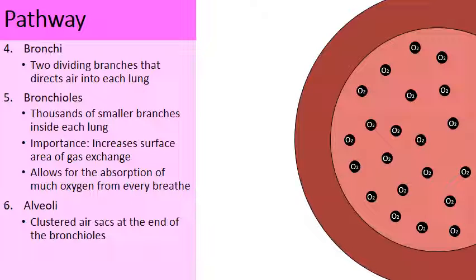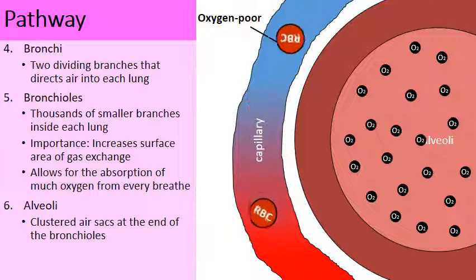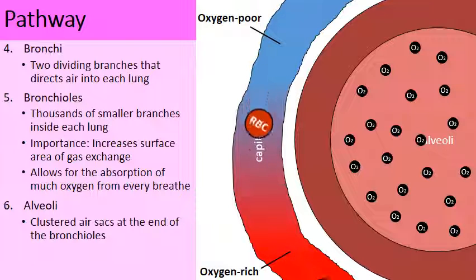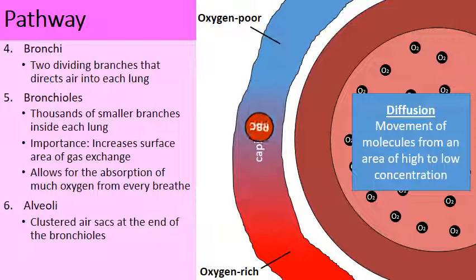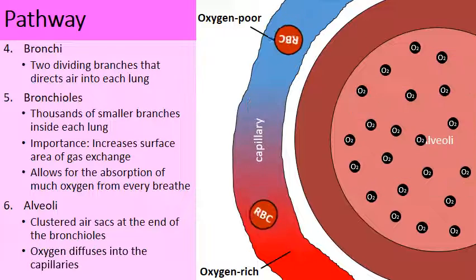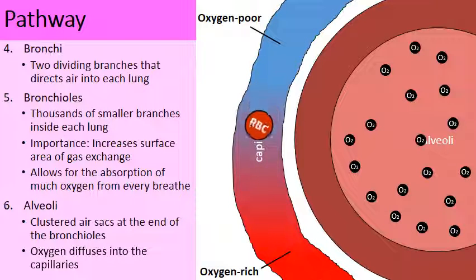Here's all the oxygen that just entered, and there's a blood capillary wrapped around the alveolus. The blue area of the capillary represents an area that's oxygen-poor and the red represents an area that's oxygen-rich. If you remember what diffusion is — the movement of molecules from an area of high to low concentration — right now there's a high concentration of oxygen inside the alveoli and a low concentration in the capillaries.